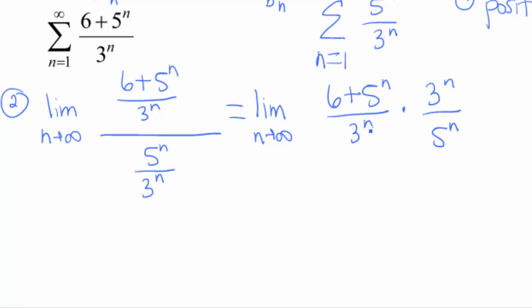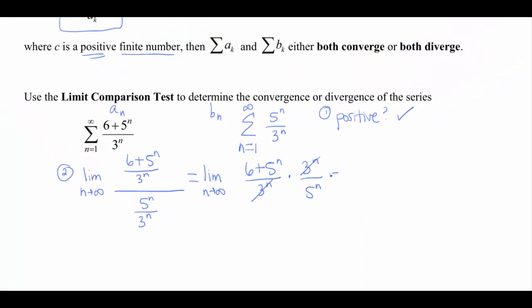Okay, you'll notice something magical happens, right? Our 3 to the n's cancel, that's wonderful. So now I'm gonna end up with the limit as n approaches infinity of 6 plus 5 to the n over 5 to the n.